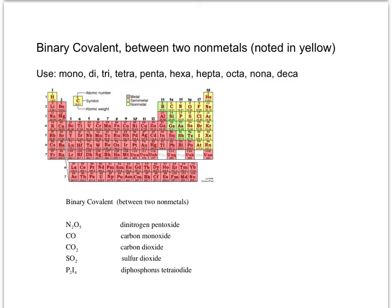For example, N₂O₅ — you say dinitrogen because there are 2 nitrogens, then penta for 5. Notice that when penta precedes a word starting with 'o', you drop the 'a' and say pent-oxide. So it's dinitrogen pentoxide. The name tells you there are 2 nitrogens and 5 oxygens, and that it's binary.